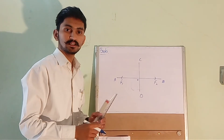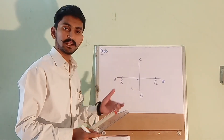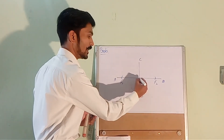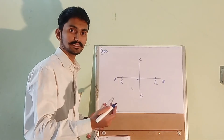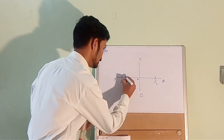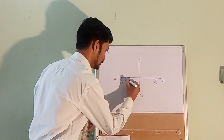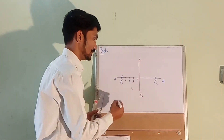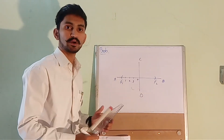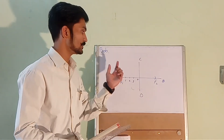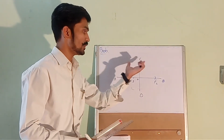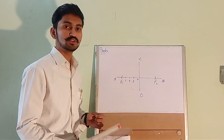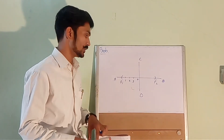Now take a random number of points between F1 and O — let's say three points: 1, 2, and 3. These three points will help us get points that lie on the ellipse to construct it.